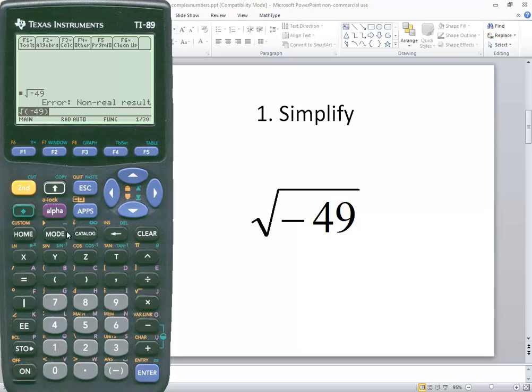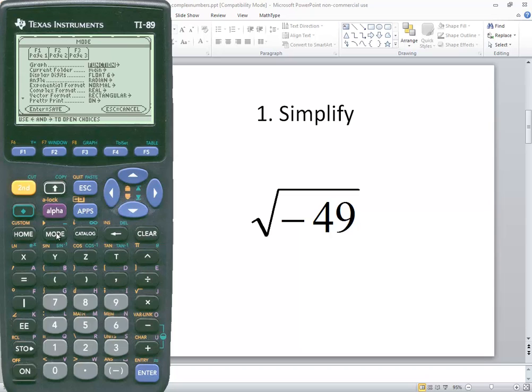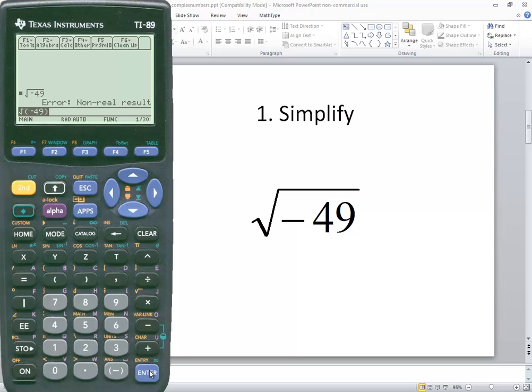if I go into mode, so if I press my mode button and I go down to complex format instead of having to say real, if I right arrow and choose rectangular and press enter, and enter one more time now if I do the square root of negative 49, it gives me 7i.